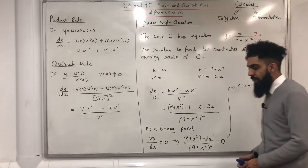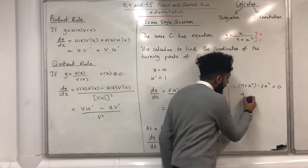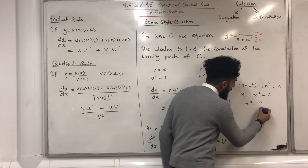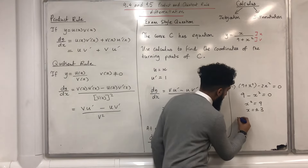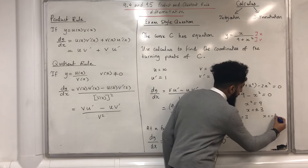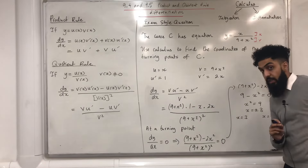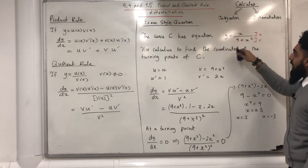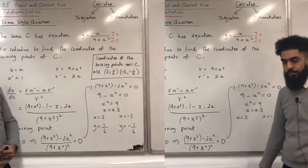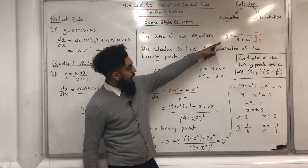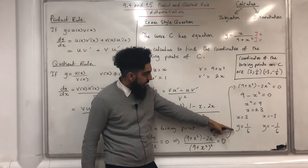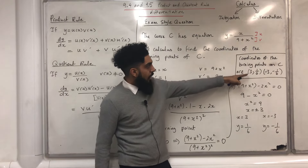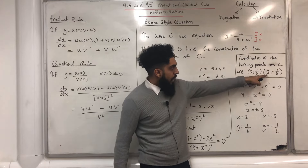Rearranging gives x² = 9, therefore x = ±3. To find the coordinates, I substitute x = 3 and x = −3 into the equation for y. When x = 3, y = 1/6. When x = −3, y = −1/6. Therefore the coordinates of the turning points on C are (3, 1/6) and (−3, −1/6).